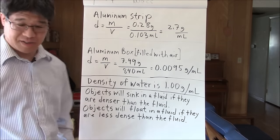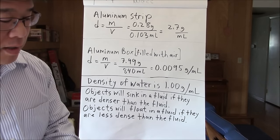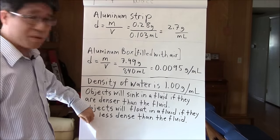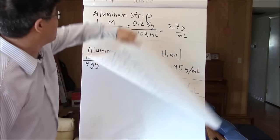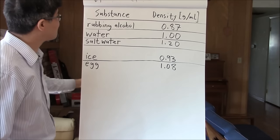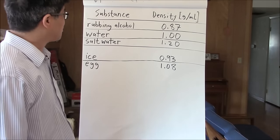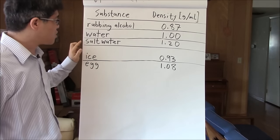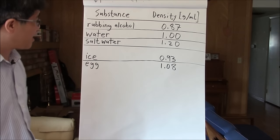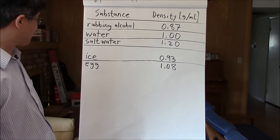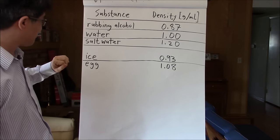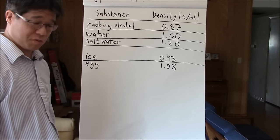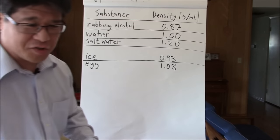Objects float in a fluid if they are less dense than the fluid. We can use this property to show some interesting things. Rubbing alcohol has a density of 0.87 g/mL, water is 1.00 g/mL, and saturated salt water is 1.2 g/mL. Ice has a density of 0.9 grams per milliliter and an egg has a density of 1.08 grams per milliliter.